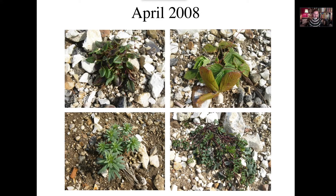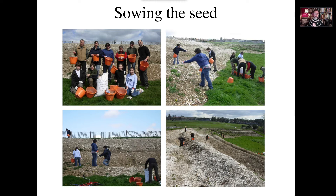We also decided to sow the land with a proprietary seed mix. This is not local provenance like John's stock — John's is all local genetic stock, which is very valuable and important in these projects. We were sowing with an Emorsgate EM6 seed mix for chalk and limestone soils, which was quite a diverse mix.